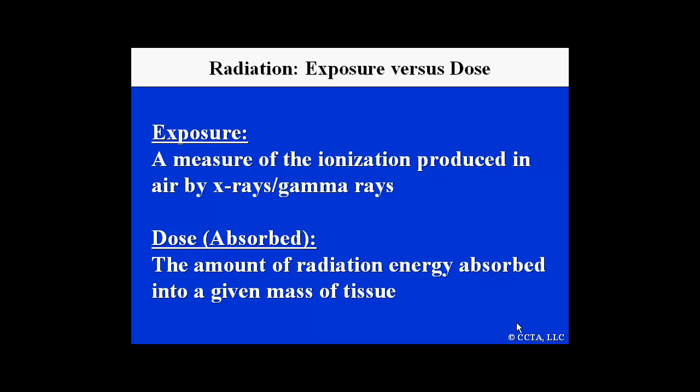There are two important parameters: exposure versus dose. Exposure is a measure of the ionization produced in air by X-rays and gamma rays. So when we go on the beach we are exposed to the sun, but that has little to do with internal dosing.